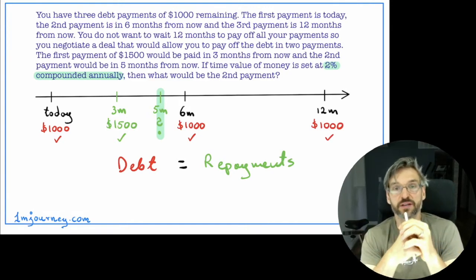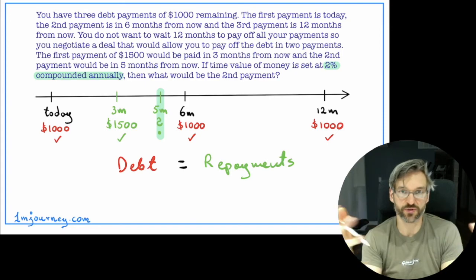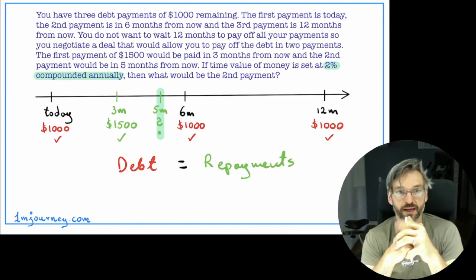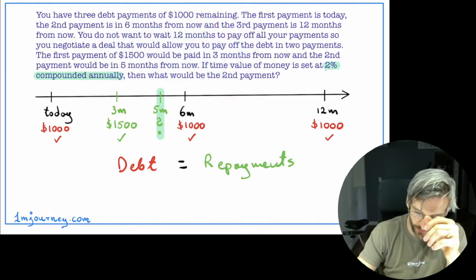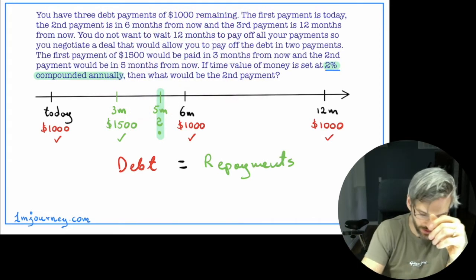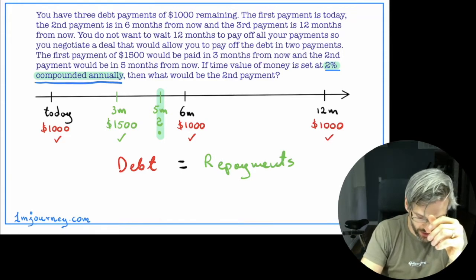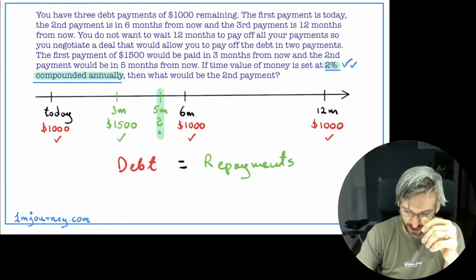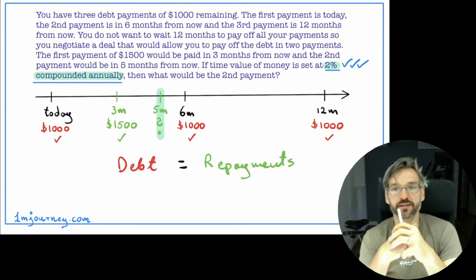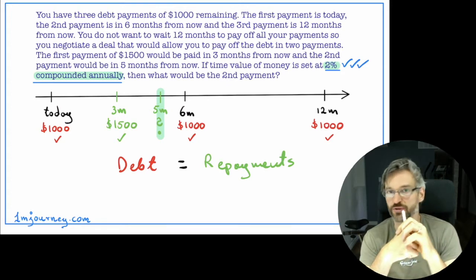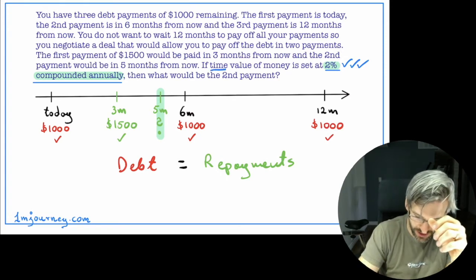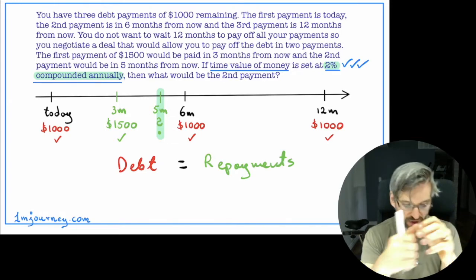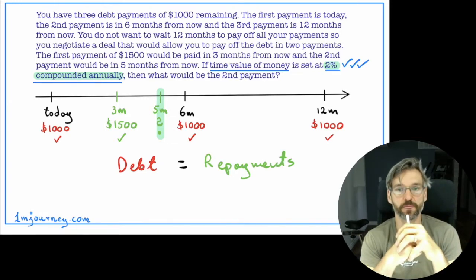That's oftentimes what students would do, and they forget — don't forget your time value of money. Money changes over time and there is an interest associated with it. Typically they will give you what the time value of money actually is. In this case it's 2% compounded annually, so we're going to be using that to try to match.